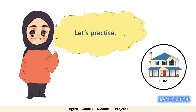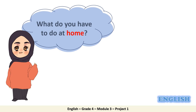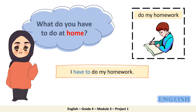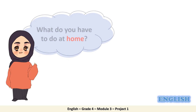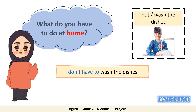Now let's practice giving rules at home. Read the question with me and refer to the picture to answer. What do you have to do at home? Look at the picture — do my homework. I have to do my homework. Make sure everyone, you do your homework on time. What do you have to do at home? In the picture it says 'not wash the dishes,' so you should form the negative: I don't have to wash the dishes.